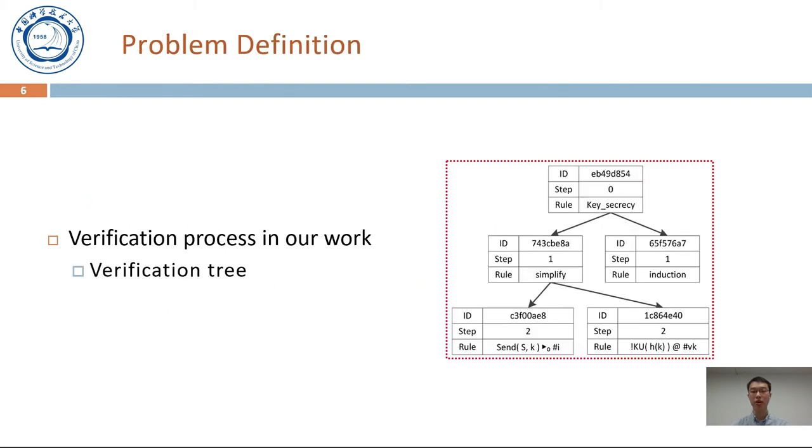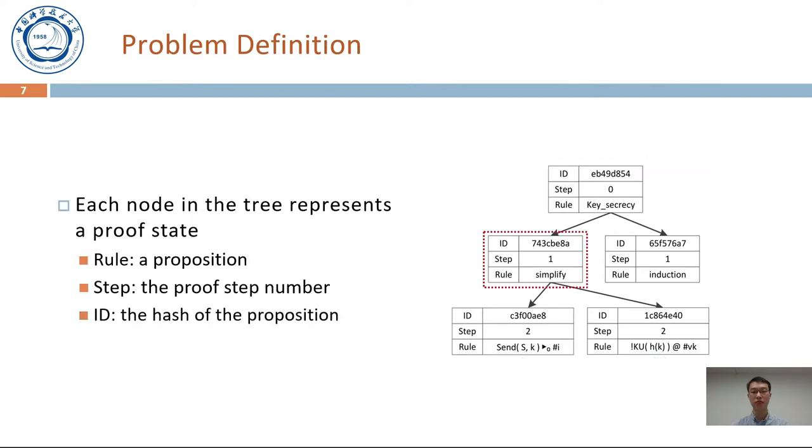To describe our problem definition, we firstly illustrate the verification process in our work. The process is implemented in a verification tree. In the tree, each node represents a proof state. We collect the propositions in each proof step of Tamarin Prover and store it in the node. To uniquely identify a node, we additionally store the hash value of the proposition and the proof step number in the node.